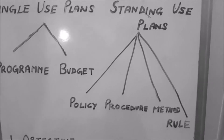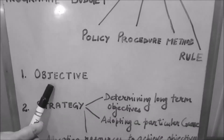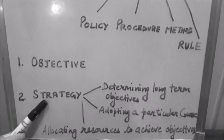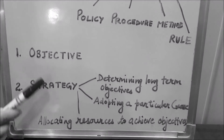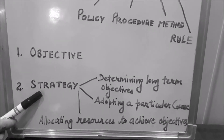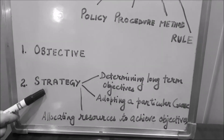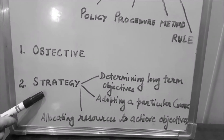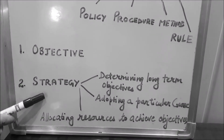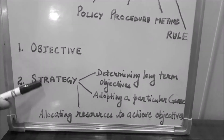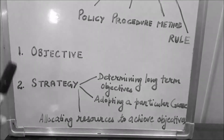There are two more plans: objective and strategy. These are the two plans which are neither part of standing use plans nor part of single use plans, so they do not fall into any of the categories.